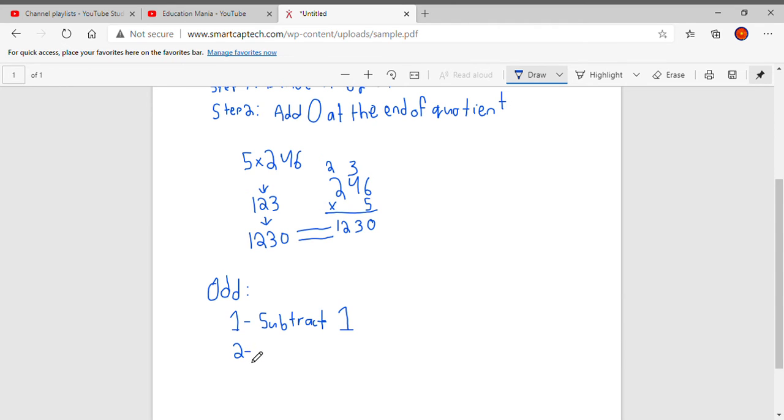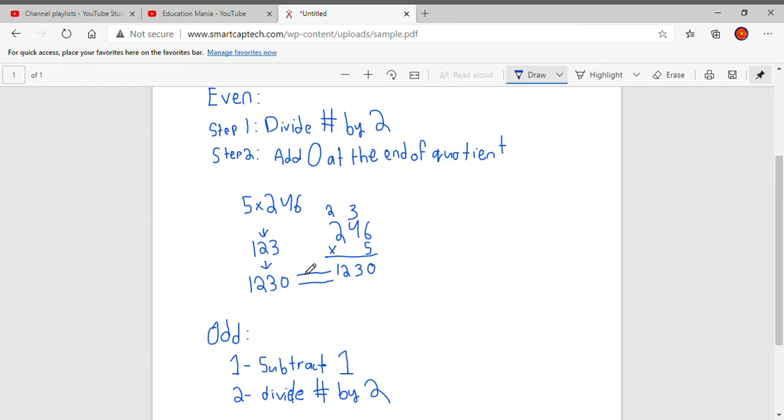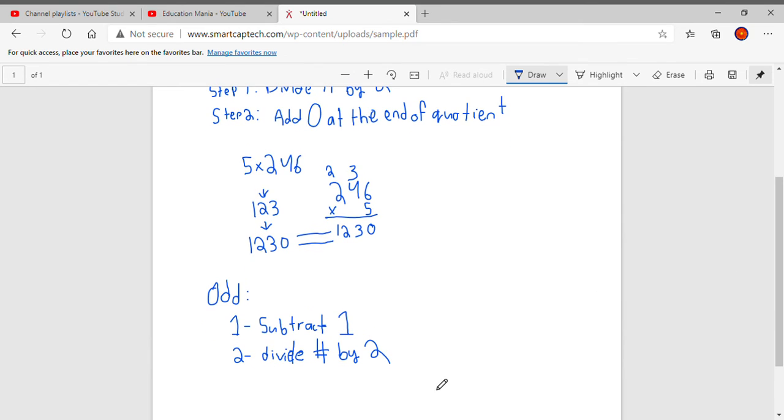So divide number by two. Same thing here, but except we added a step subtracting one. Now we divide it by two. Now add zero is what is here for even numbers. But for this one, we have to add five, as I mentioned earlier, at the end.